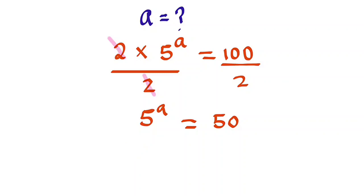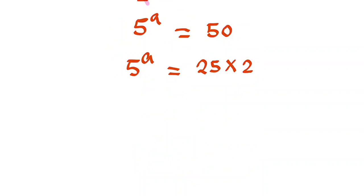So 5 to the power of a equals 50. Note that 50 equals 25 multiplied by 2, because 25 times 2 gives us 50. So we're going to have 5 to the power of a equals 25 times 2. Now let's introduce log to both sides.